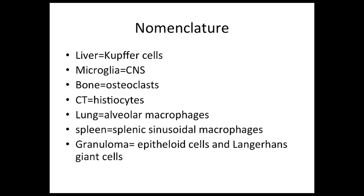If macrophages enter your connective tissue, you would call them histiocytes. If they are found in the lungs, you call them alveolar macrophages — these are the ones that destroy and digest all different inhaled harmful agents. We already spoke about the splenic macrophages as well.